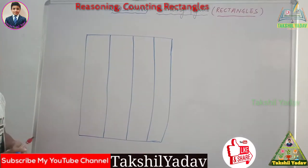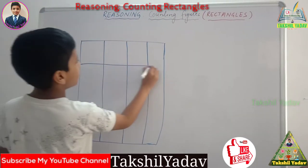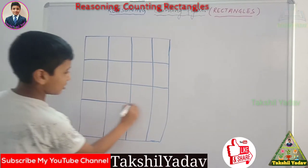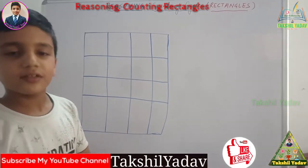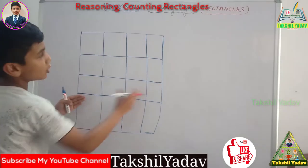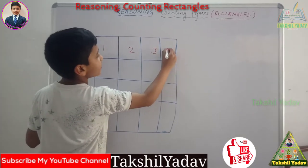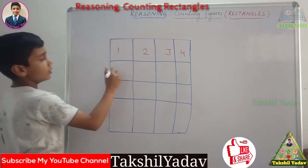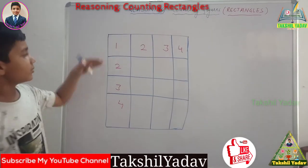Now I am going to draw the rows. Rows go from left to right. So I have one row, the second row, the third row, and this is the fourth row. Now how will we count rectangles in this figure? First we have to mark numbers. We mark columns 1, 2, 3, and 4 — four columns. And then rows: 1, 2, 3, and 4. Now what we have to do is sum up these numbers.